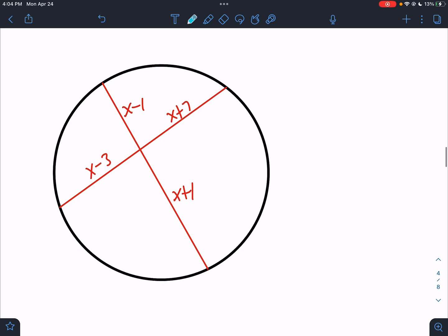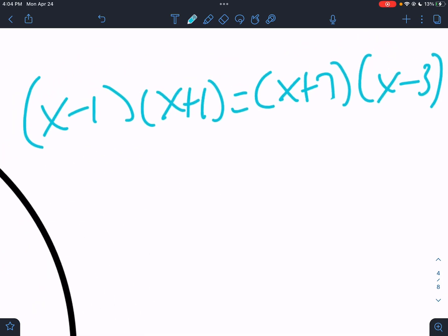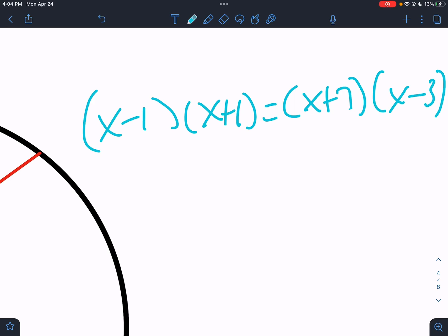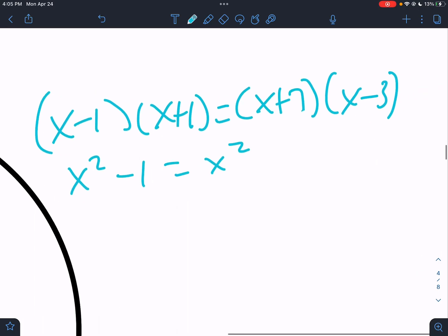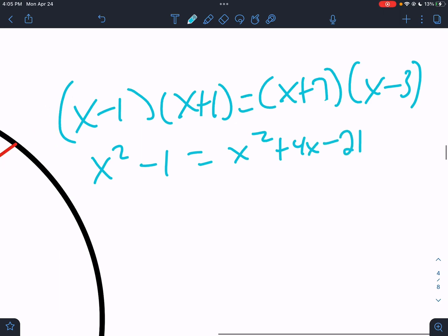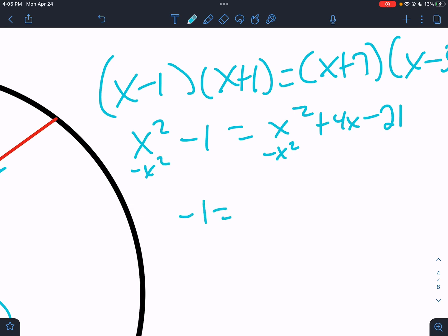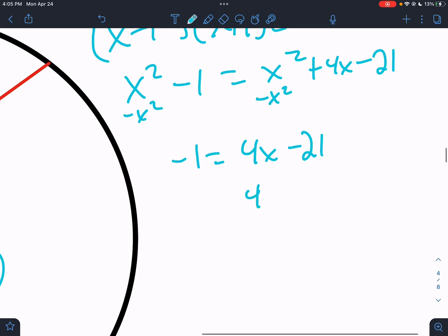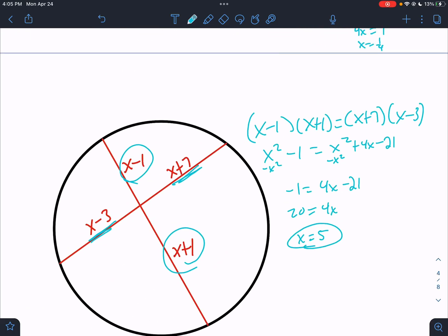Here's another example. Chord times chord. Or sorry, we have two chords intersecting. So we're going to do part times part. x minus 1 times x plus 1 equals part times part. x plus 7 times x minus 3. So we distribute out and we practice this. On the last video, I really hope you watched that one. Don't just skip through it. I said a lot of good things in there. But this would be x squared minus 1. I hope we know this quickly and correctly. This would be x squared plus 4x minus 21. We can subtract x squared from both sides and we have negative 1 equals 4x minus 21. So 4x would equal 20 if we add 20 to both sides and x equals 5.